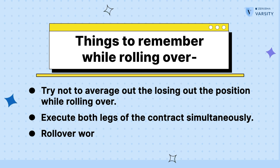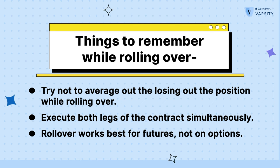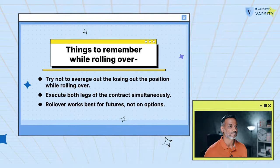Lastly, rollover as a concept works very well for futures, but doesn't work that well for options. Option premiums are not just influenced by the directional factor, but they have other factors such as vega and theta at play. I hope you found this video useful. I'll see you guys in the next video.